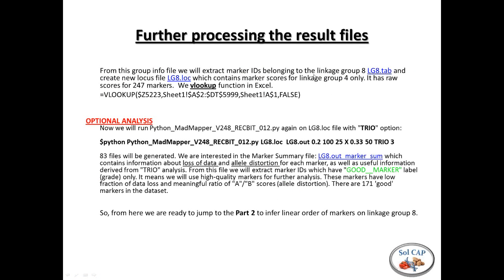If you want to do a TRIO analysis, you use the same MADMapper script as before, except you change the word to TRIO, and your input file is now by linkage group — in this case linkage group 8. The TRIO analysis gives you a tighter grouping and a few extra statistics like allele distortion, which lets you pull out a subset of higher-quality markers within that group. We actually don't use TRIO analyses in our inner analyses.